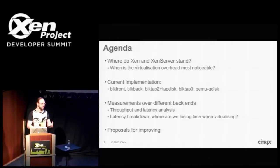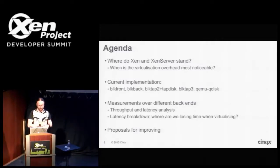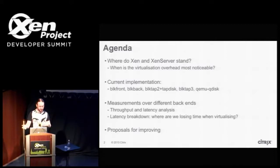So what happens in terms of the virtualization overhead when you're using this kind of storage? I'll review very quickly how block front, block back, block tap, QEMU, block tap 3, QDisk, etc. work — in case you get confused with the terminology — and share some of my recent measurements, explaining how I've been measuring things and talking about what we're doing to improve. This is both from a Xen and a Xen Server perspective.